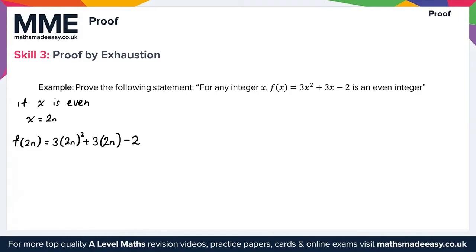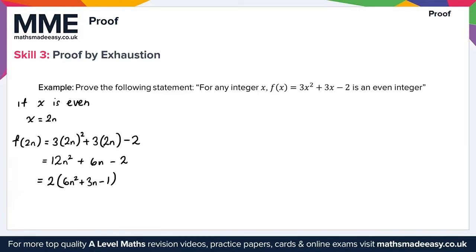Expanding: (2n)² = 4n², times 3 gives 12n², and 3 times 2n gives 6n, minus 2. Factoring out 2 gives 2(6n² + 3n − 1). Since n is an integer, 6n² + 3n − 1 is also an integer, and therefore 2 times an integer is an even integer. So f(x) is even when x is even.